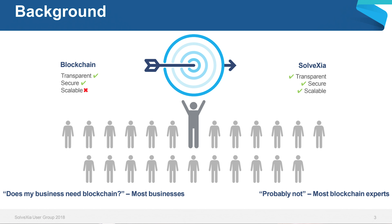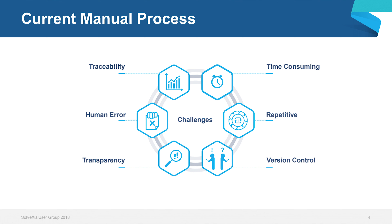While managers tend to default to blockchain smart contracts as the solution, they tend to overlook other alternatives such as automation, which can provide a more seamless experience when it comes to contract generation, approval, and management. With current technology, automation is a transparent, secure, and scalable solution that is quick to develop and quick to modify.